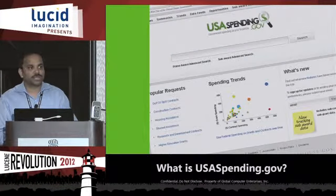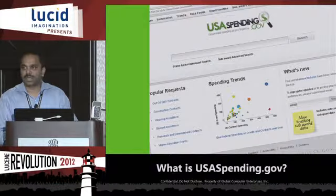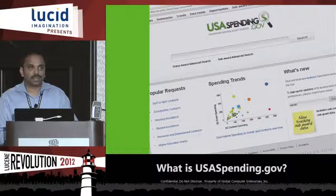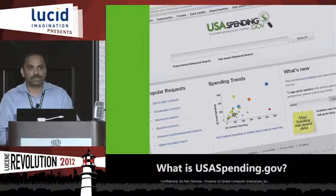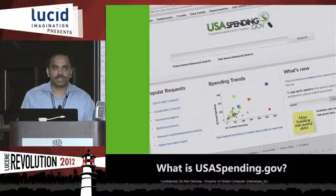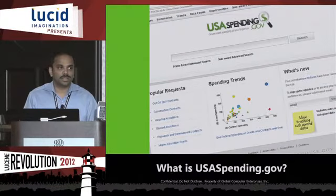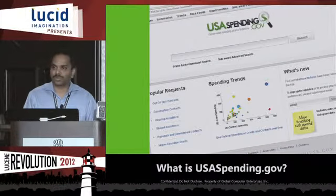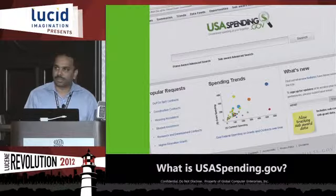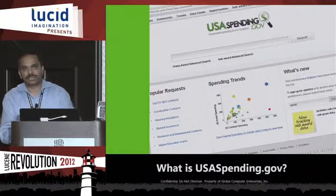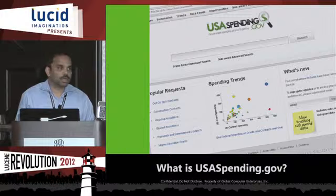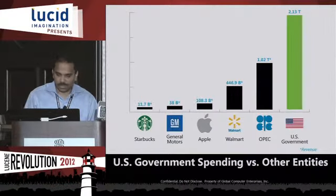The site gives a lot of information about how the government is spending our tax dollars. There are different departments and agencies in the federal government that spend money for different purposes — contracts, grants, loans, and social security payments. All the data is collected by the system either in real time or in batch mode from different sources. The system is very heavy on statistics and aggregation queries, not just free text search — it is more focused on statistics.